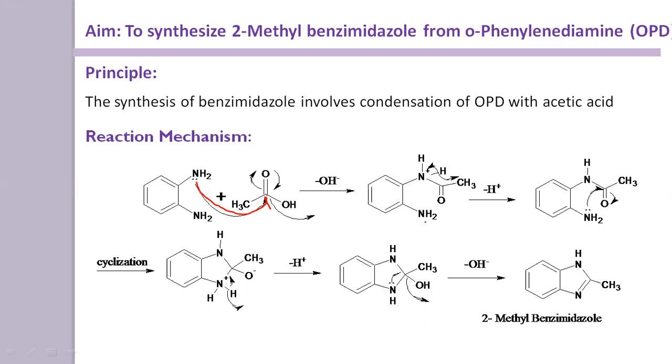And this intermediate which is unstable, from that there is a loss of proton. And the bonding electron goes towards this nitrogen atom.